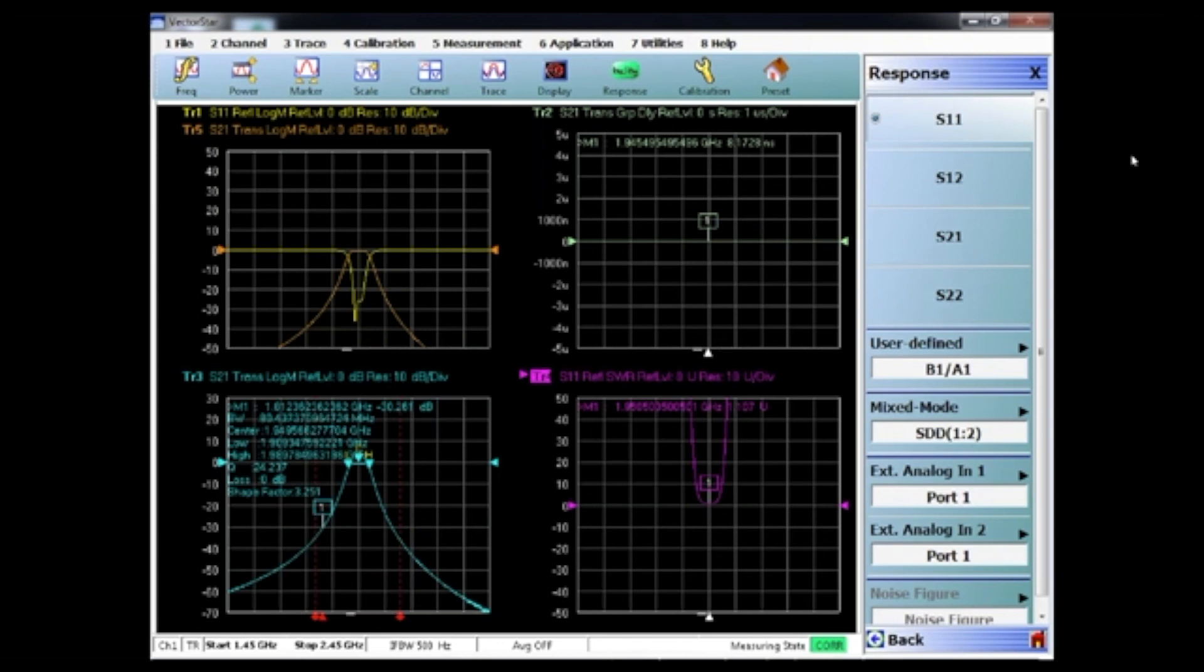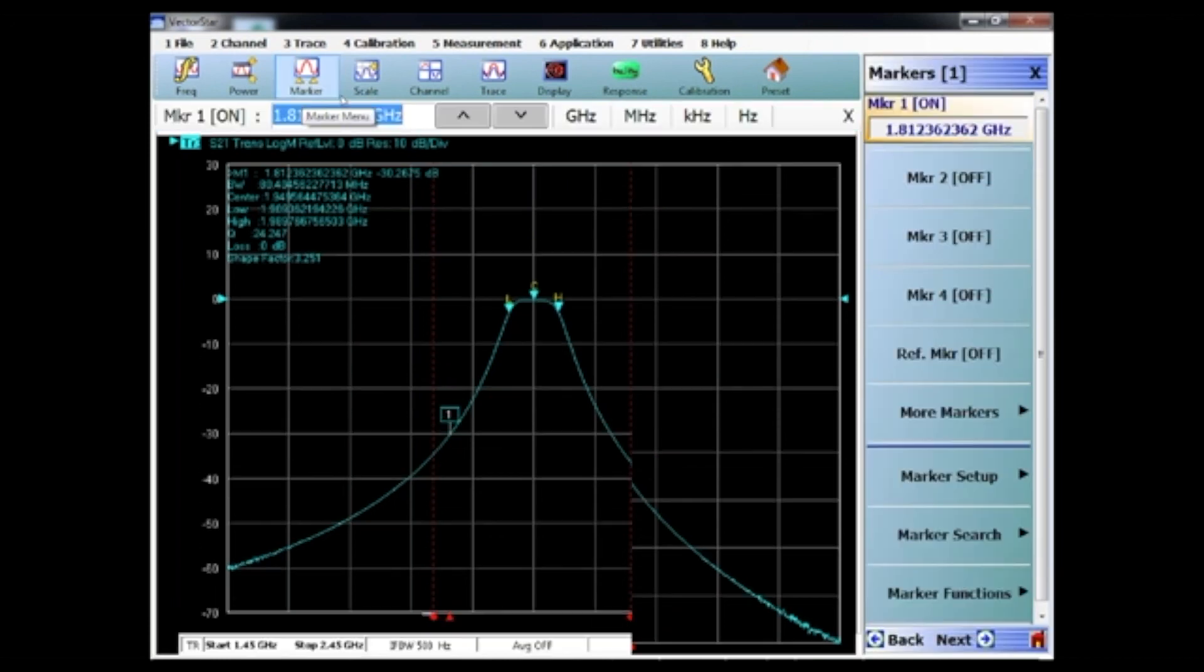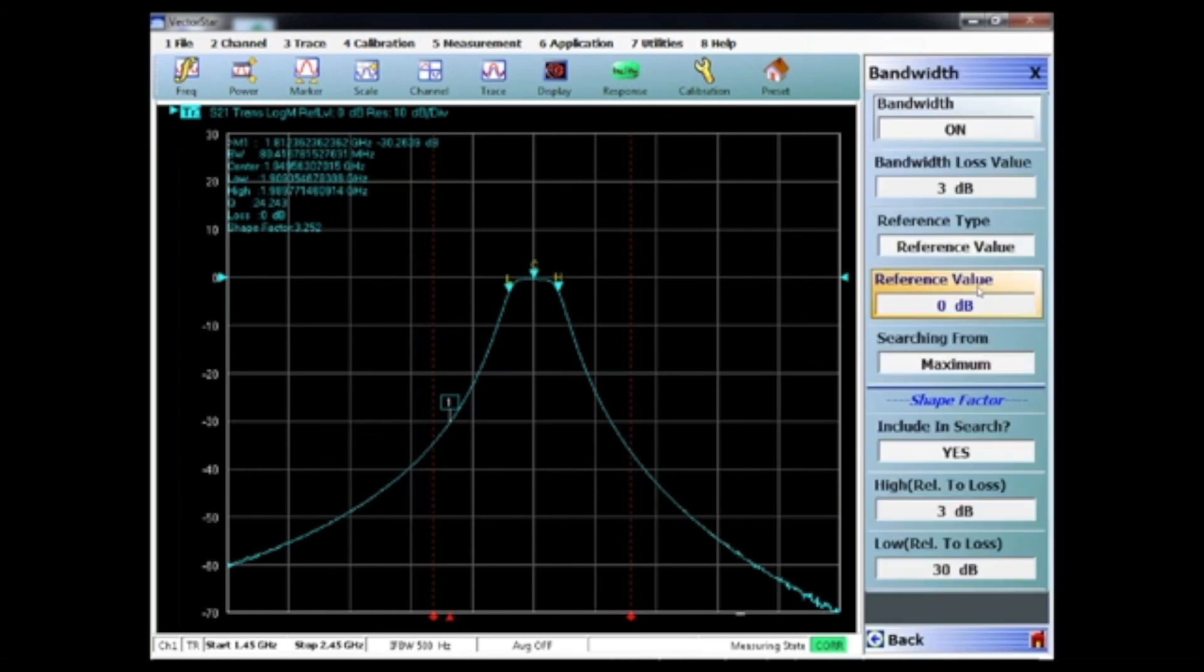So we'll look at the S21, and what you'll notice is that under markers and marker search function, go to advanced, and I'm going to make bandwidth measurements. I have that turned on, and what this is giving me is my Q factor. For this particular filter, it's 24 dB. And then I also have my shape factor, which is 3.251 to 1. So those are all in the benchtop models.